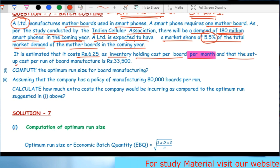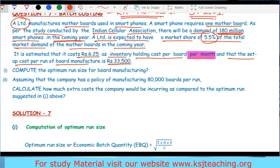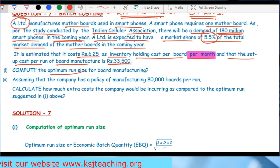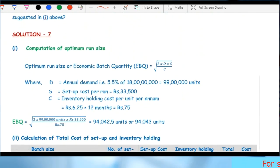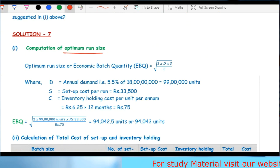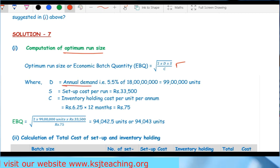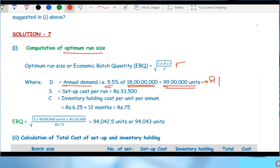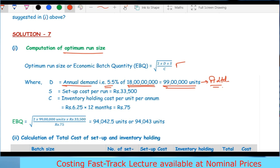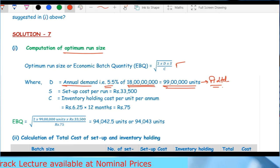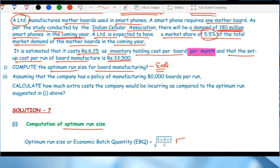The setup cost per run of board manufacturing is Rs 33,500. Compute the optimum run size for the board - that's asking for EOQ. The formula is square root of 2DS/C, where D is annual demand, which is 5.5% of 180 million, equals 9.9 million units for A Ltd.